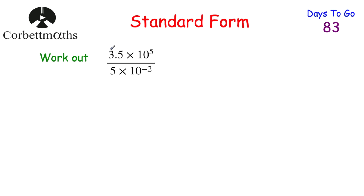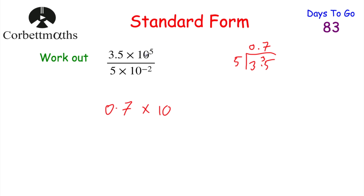Try this: 3.5 × 10⁵ ÷ 5 × 10^(-2). Divide the front numbers: 3.5 ÷ 5 = 0.7. For the powers: 10⁵ ÷ 10^(-2) = 10^(5 − (−2)) = 10^(5+2) = 10⁷. So we have 0.7 × 10⁷. But 0.7 isn't between 1 and 10, so multiply it by 10 to get 7, and reduce the power by 1: 7 × 10⁶.